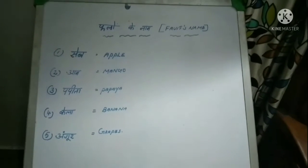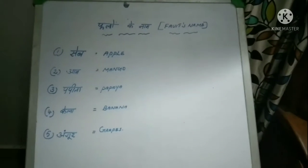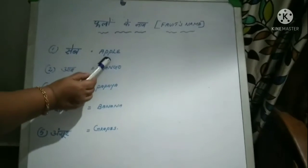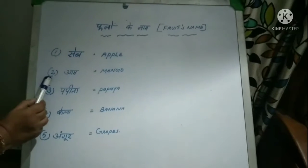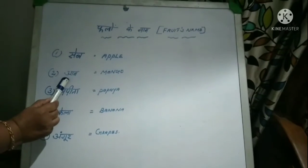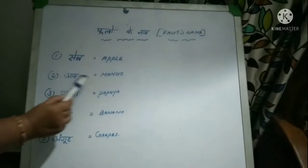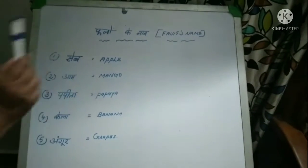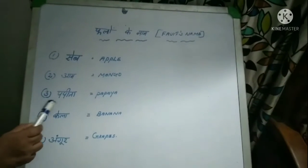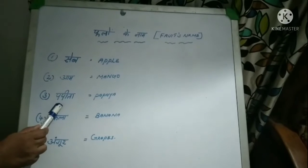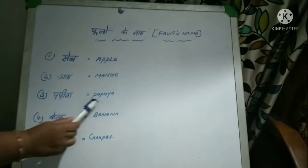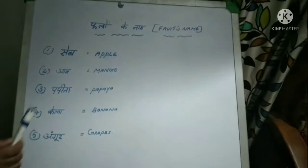Number 1: Seb. Seb means Apple. Number 2: Aam, Aam means Mango. Number 3: Papitha, Papitha means Papaya.